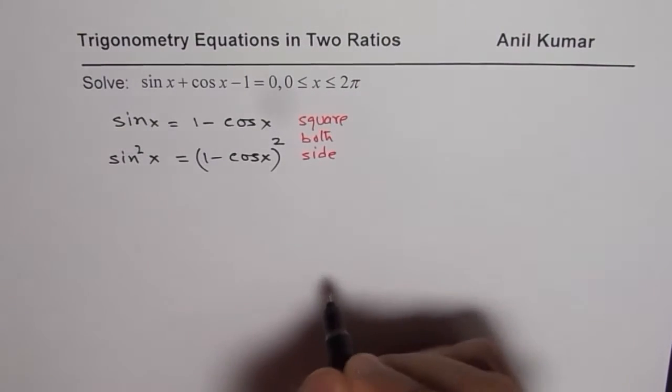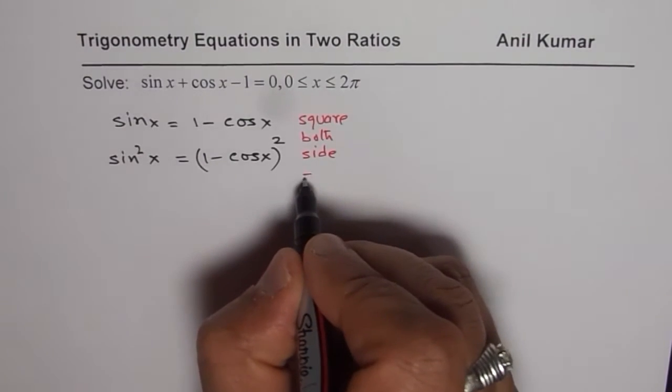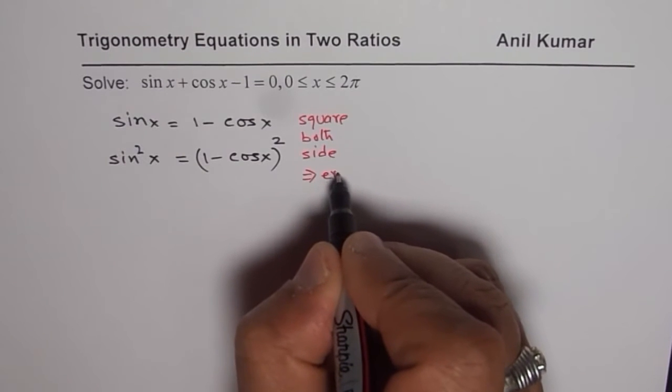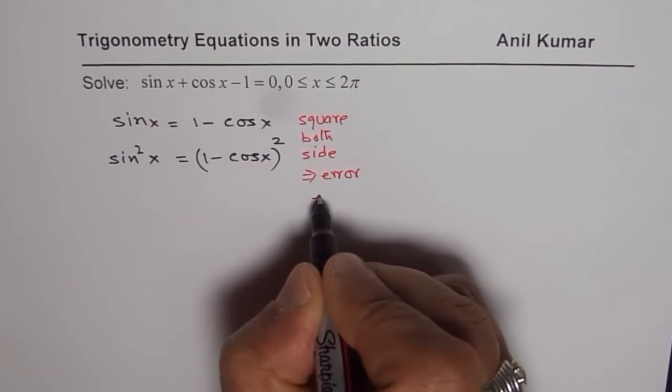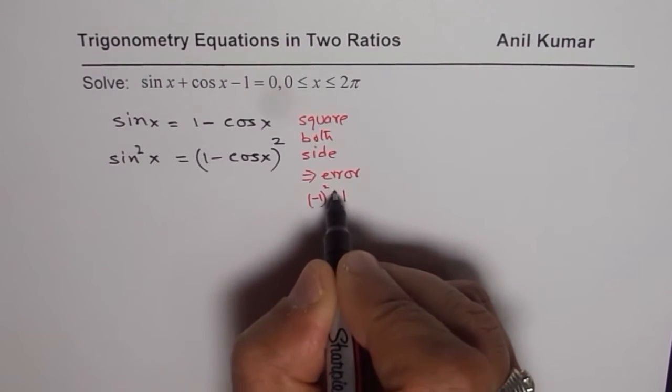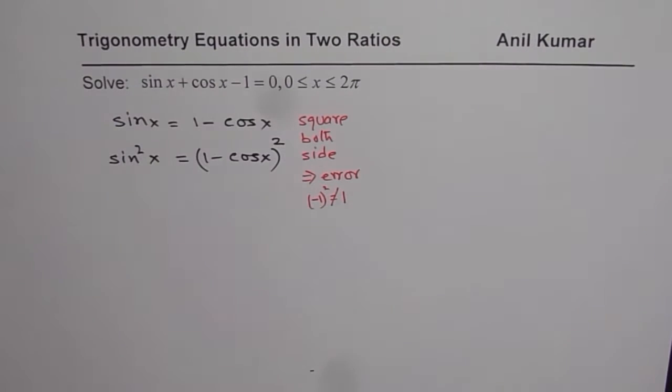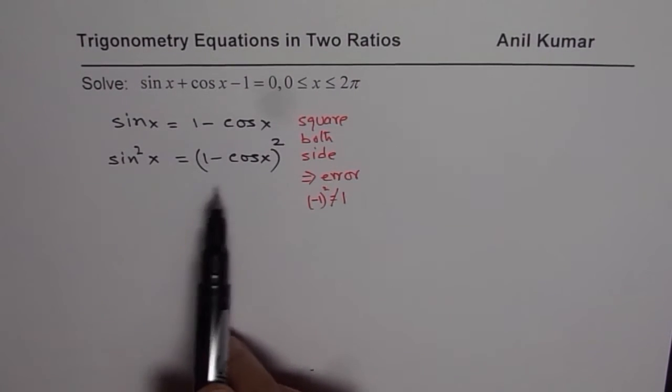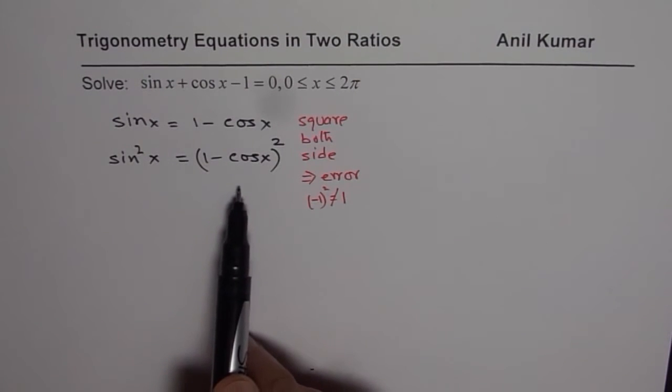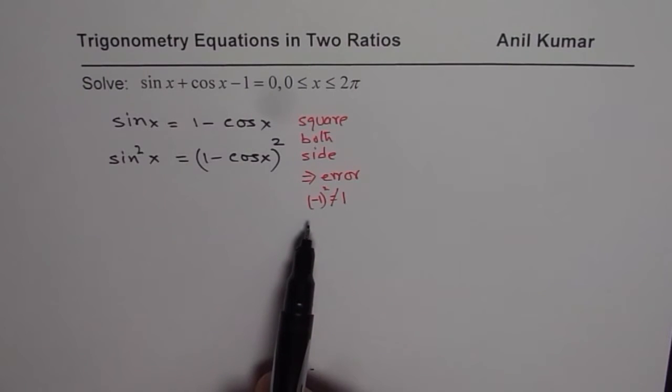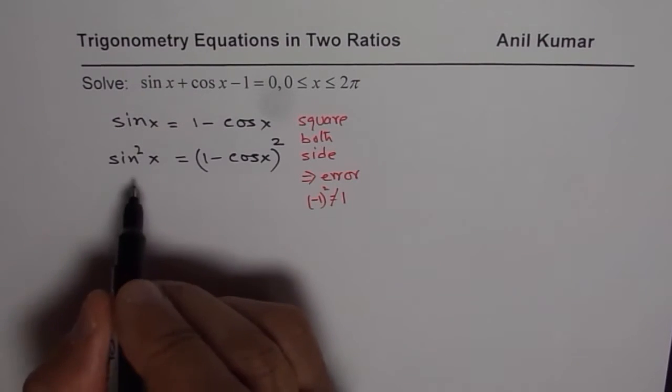Whenever you square both sides you will result into some error. Error because minus 1 square becomes 1. That is an error. You know that is not equal. But this error is caused by squaring. So whatever solution you get for the equation it is a must to check that solution and then write down the final answer. So that is a caution. Now let us continue.